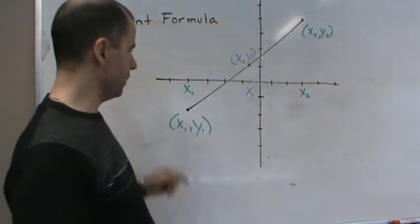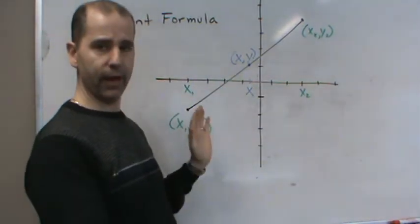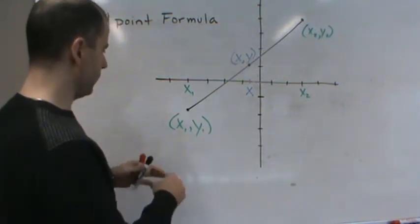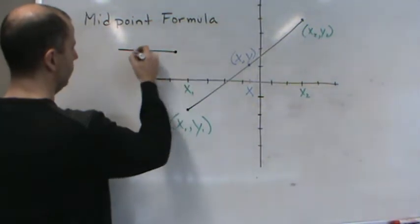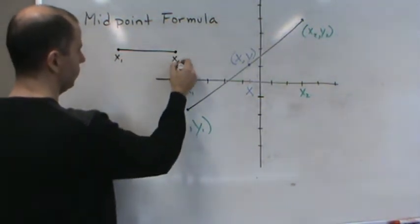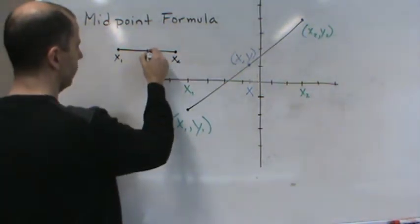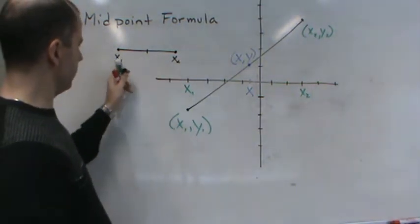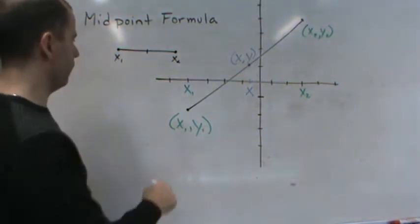Think about what if it was horizontal. If I wanted to find the midpoint between those two points on a horizontal line, and I have x1 and x2, and I want to find where's the middle — the way you do it is you take the endpoints, add them up, and divide by 2.